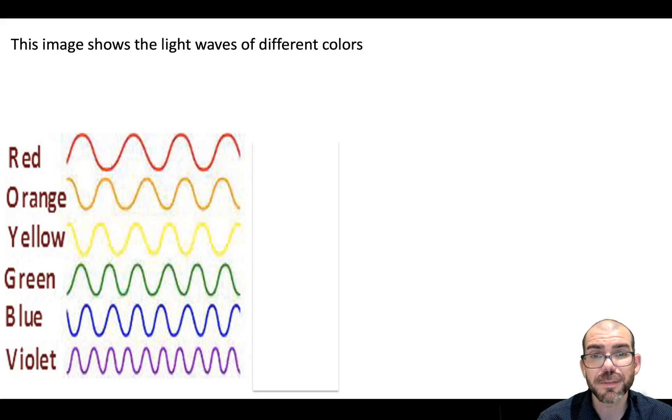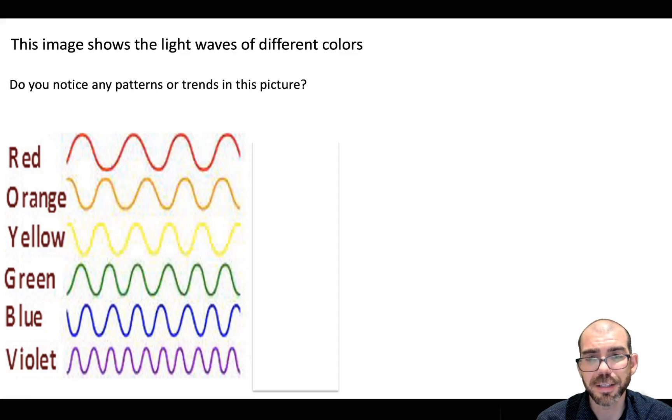Here, I'm showing you different wavelengths of visible light. Here you can see red, orange, yellow, green, blue, and violet. Do you notice any patterns or trends between these colors?